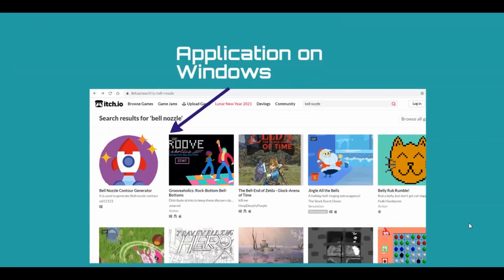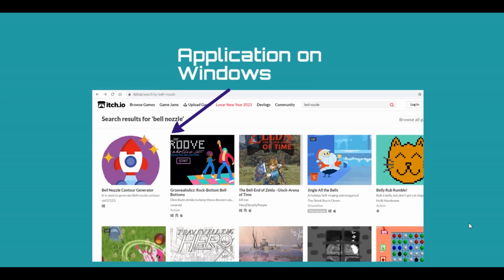We even published this application in itch.io. You can go to the itch.io website and search about bell nozzle. You will find our application. Feel free to download and use it for yourself.